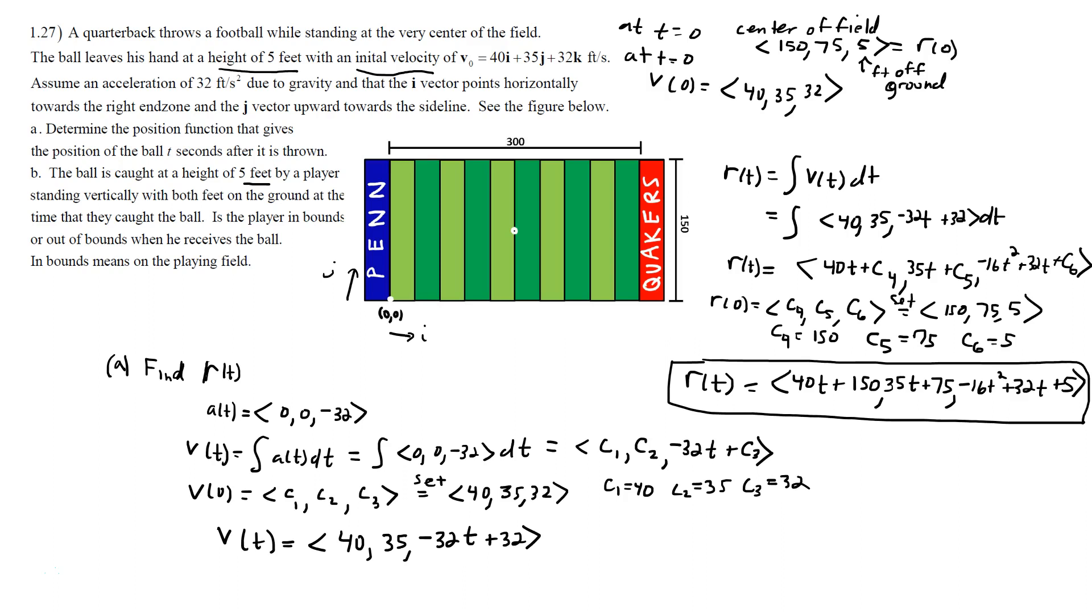And the question is, when the player somewhere here catches the ball, is the player in bounds? Is the player here out of bounds? Is the player in the end zone? Where's the player at? That's the question. The next time that the ball is 5 feet high, the ball starts at 5 feet high. The next time the ball is 5 feet high, it's caught. So the quarterback launches the ball, and then it's 5 feet high again when the ball is caught.